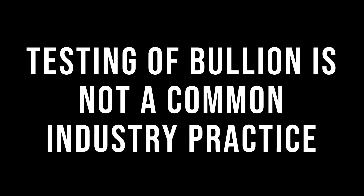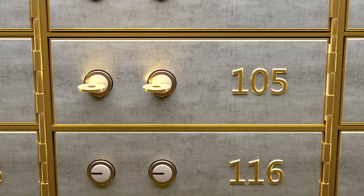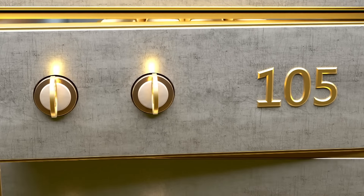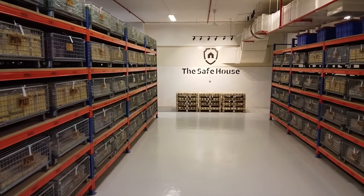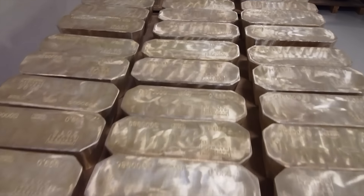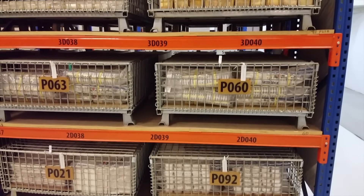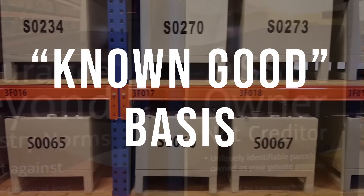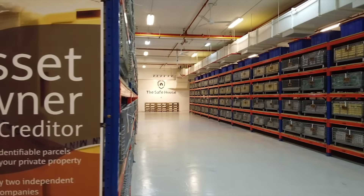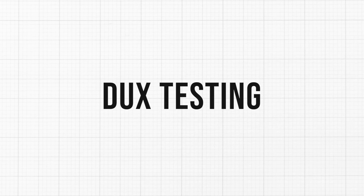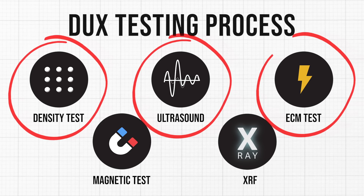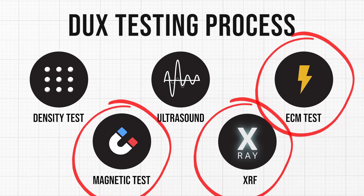Testing of bullion is not a common industry practice. It is common for vault operators to store bullion on a said-to-contain basis, meaning they are not responsible for testing whether the bullion stored is genuine. This is not the case with Silver Bullion's vault, the Safe House, which is the only entity we are aware of that does extensive testing of bullion and stores it on a known-good basis. Currently, we store over 8 million ounces of gold and silver. All bullion transferred by customers for storage in our vault undergoes a DUX testing process, which performs 3 of the 5 tests described above, before being accepted into our storage program.